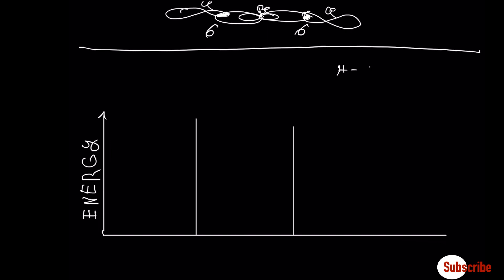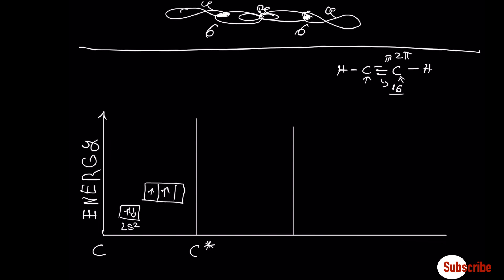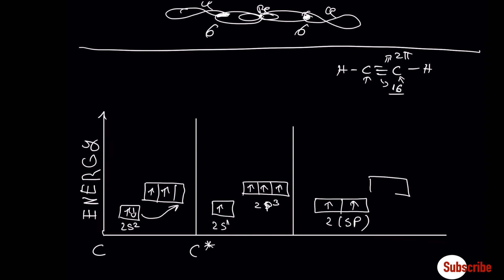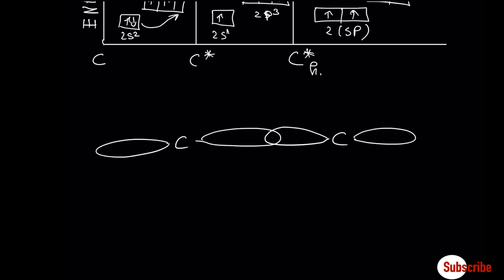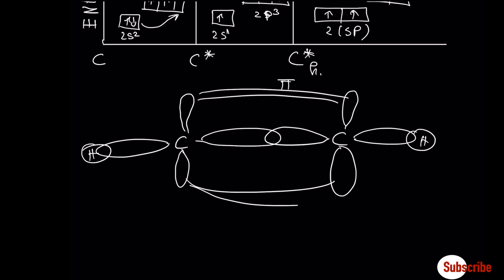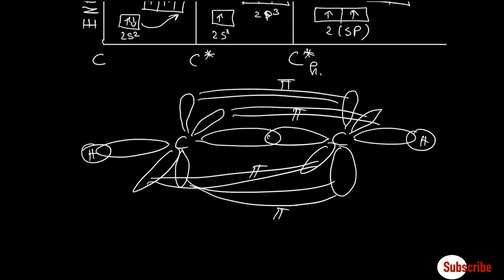Let's move now to the diagram for acetylene. Acetylene has two pi bonds and one sigma bond between the two carbons. Carbon goes to the excited state by moving one electron from s to the p orbital. In order to form four bonds, but only two are hybridized — two sp — and two remain unhybridized and form pi bonds. So as you see, in the middle is a sigma bond and on the sides are the two pi bonds, perpendicular to each other.